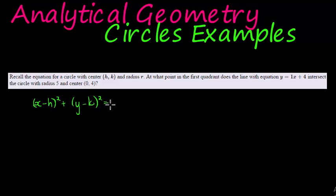At what point in the first quadrant does the line with equation (given) intersect a circle with radius 5 and center (0, 4)?